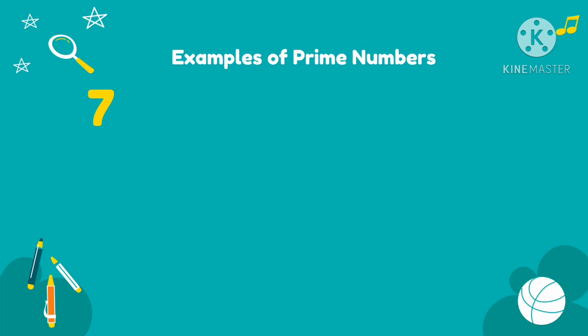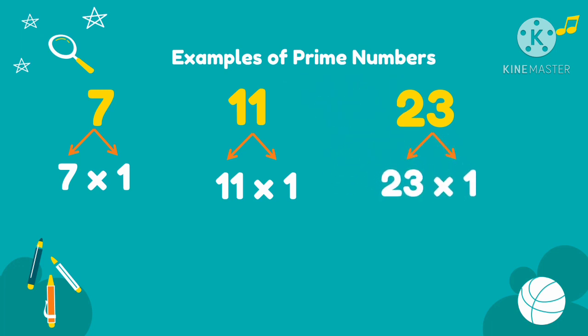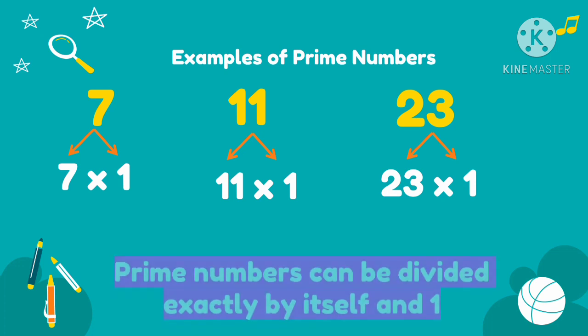Here are some examples of prime numbers. So we have 7. So the factors of 7 are 7 and 1. So 1 and itself. Another example is 11. So another example of prime number is 11 because the factors of 11 is 11 times 1. Then, 23. So the factors of 23 are 23 times 1. So if you notice, the factors of prime numbers are 1 and itself.